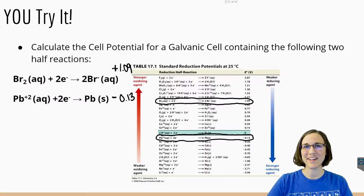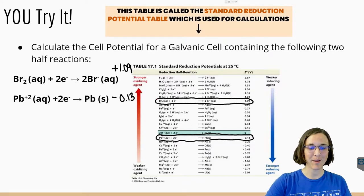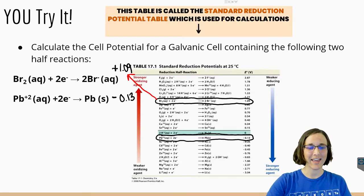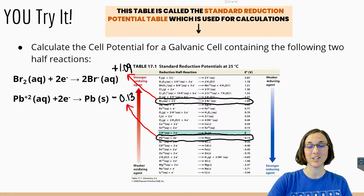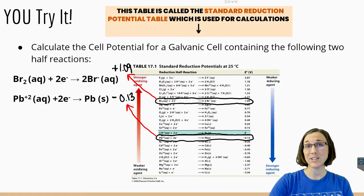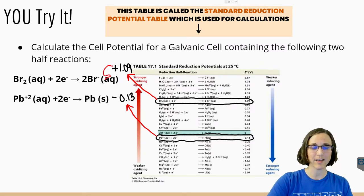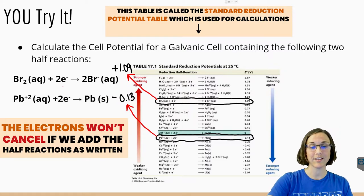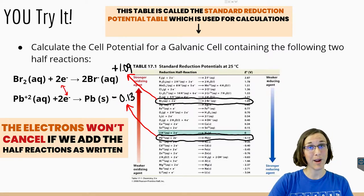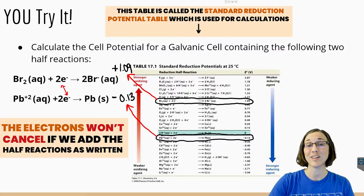The 1.09 came from the table here for this half reaction, and the negative 0.13 came from this half reaction here with lead. However, we can't add these two together even though that would give us a positive value still. As written, our electrons wouldn't cancel. So one of these equations still needs to flip around so the electrons can cancel.